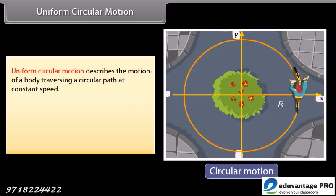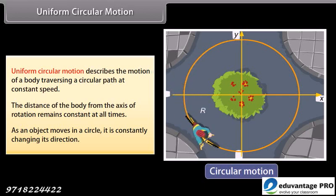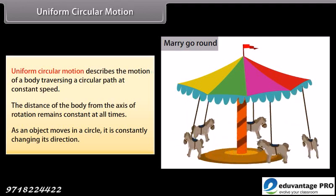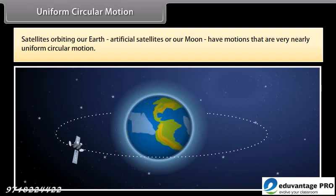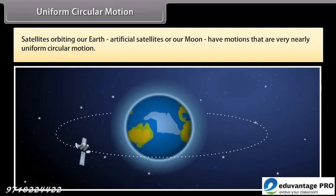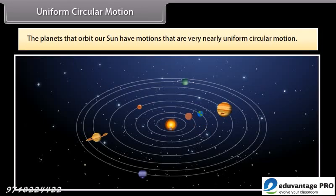Uniform circular motion describes the motion of a body traversing a circular path at a constant speed. The distance of the body from the axis of rotation remains constant at all times. As an object moves in a circle, it is constantly changing its direction. A merry-go-round is an example of uniform circular motion. Satellites orbiting Earth and planets orbiting the sun also have motions that are very nearly uniform circular motion.